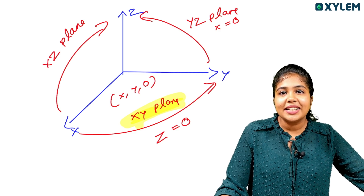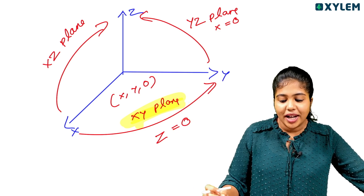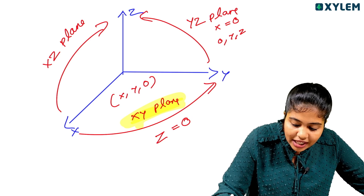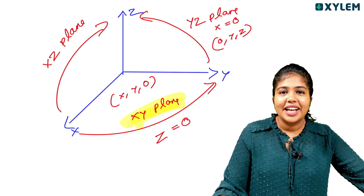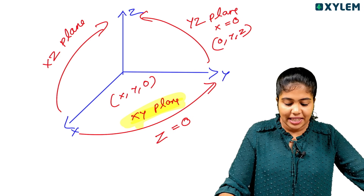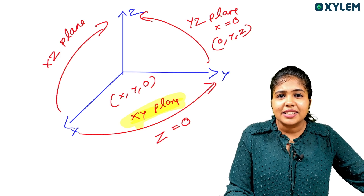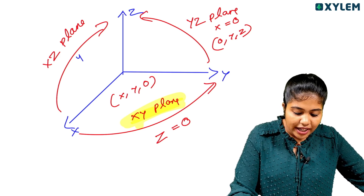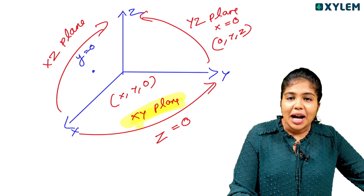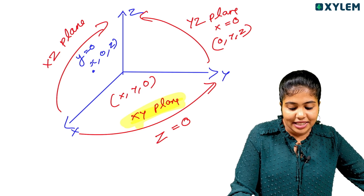For any point, the format is x, y, z. On the YZ plane, x is 0, so the point is written as (0, y, z). On the XZ plane, y is absent, so the point is written as (x, 0, z). With any point, we look at which plane it lies on, and whichever coordinate is absent, that coordinate is zero.